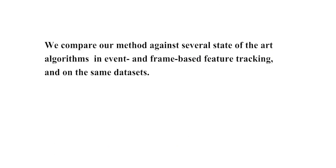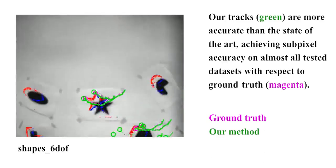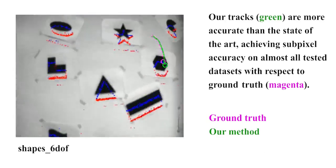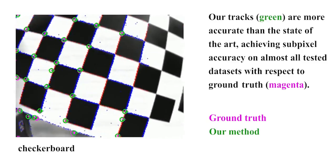We compare our method against several state-of-the-art algorithms in event and frame-based feature tracking, and on the same datasets. Our tracks, here visualized in green, are more accurate than the state-of-the-art achieving sub-pixel accuracy on almost all tested datasets with respect to ground truth.